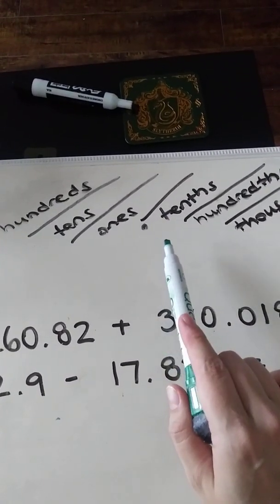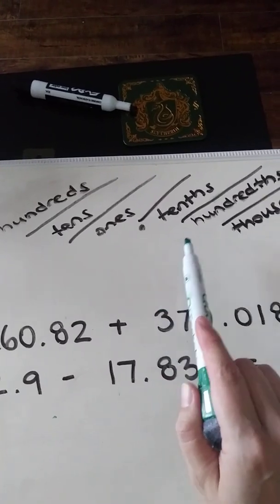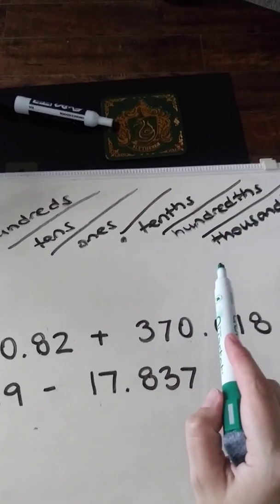I'm talking about tenths, so a fraction out of ten, a fraction out of a hundred, and a fraction out of a thousand.